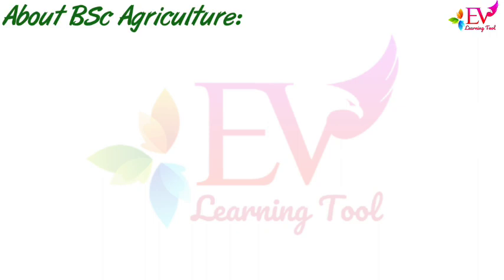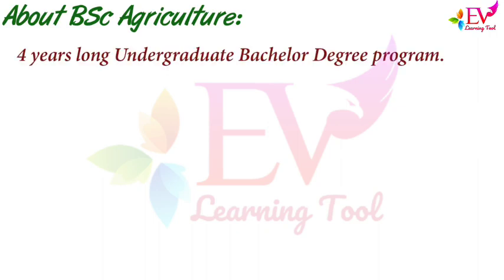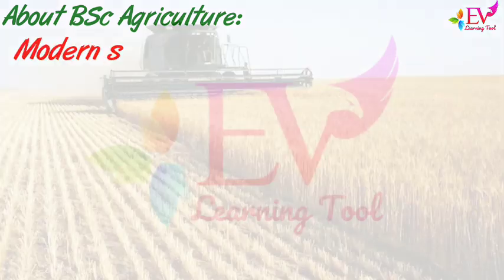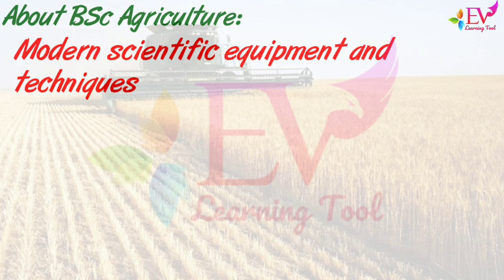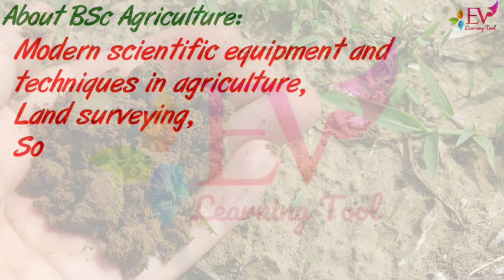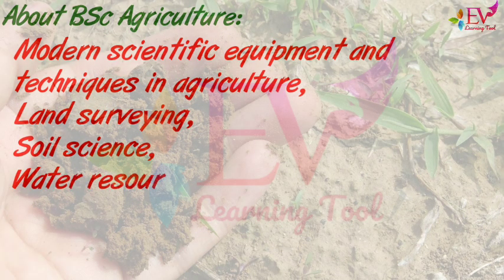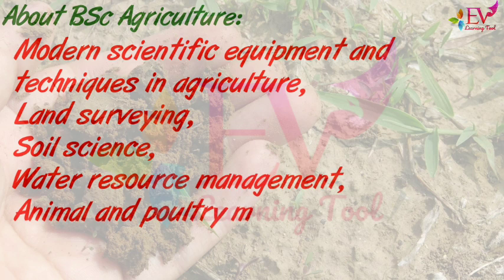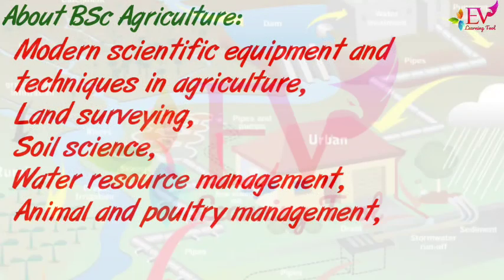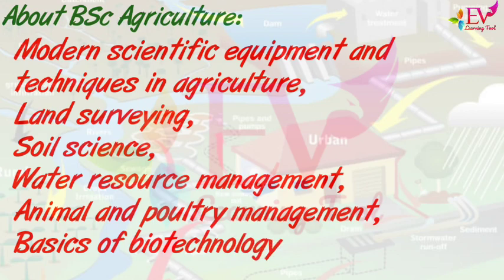About BSc Agriculture: It is a 4-year undergraduate bachelor degree program. The BSc Agriculture program consists of topics such as Agriculture Science, use of modern scientific equipment and techniques in agriculture, Land Surveying, Soil Science, Water Resource Management, Animal and Poultry Management, and Basics of Biotechnology.